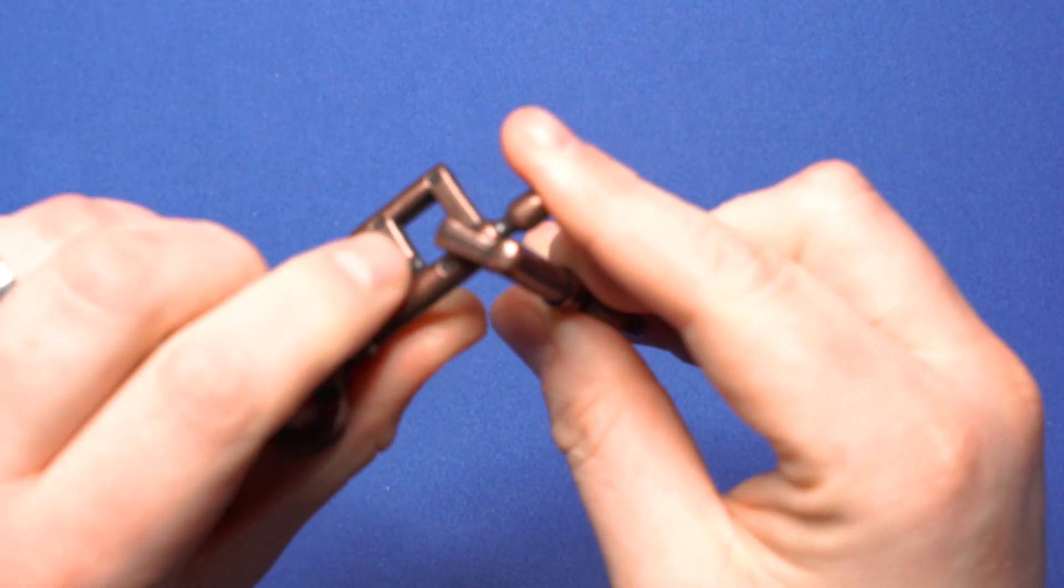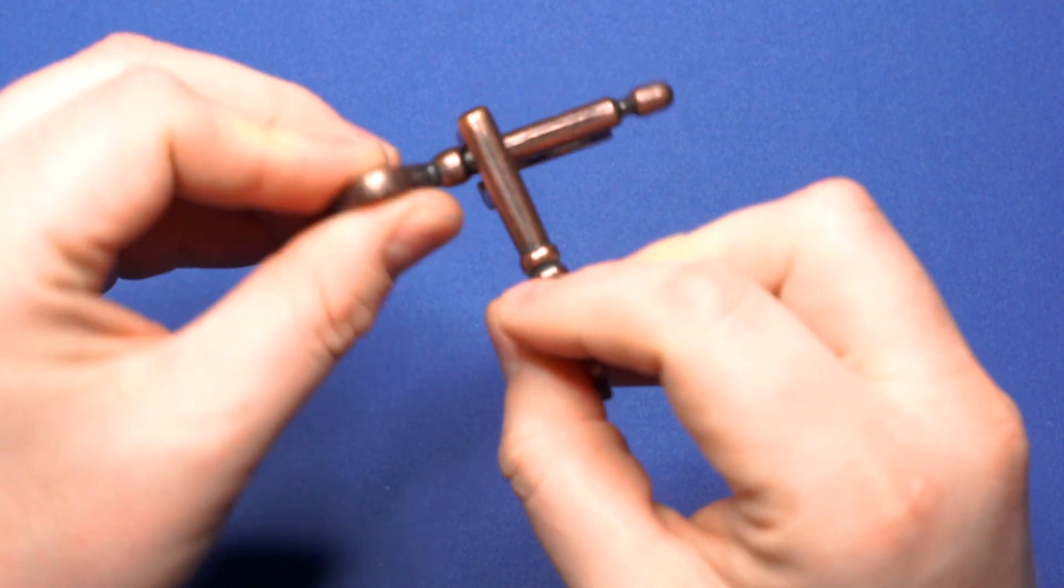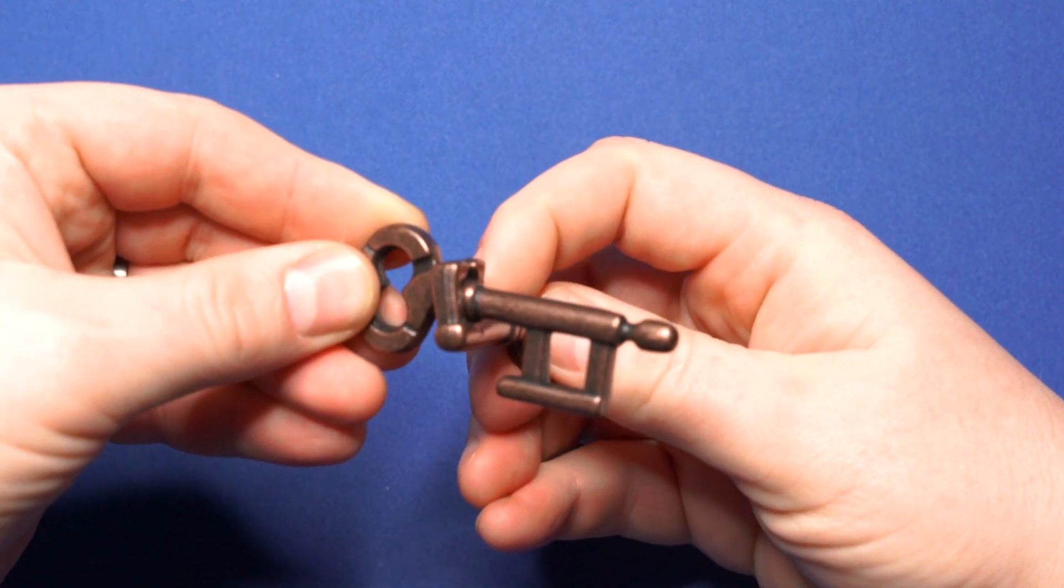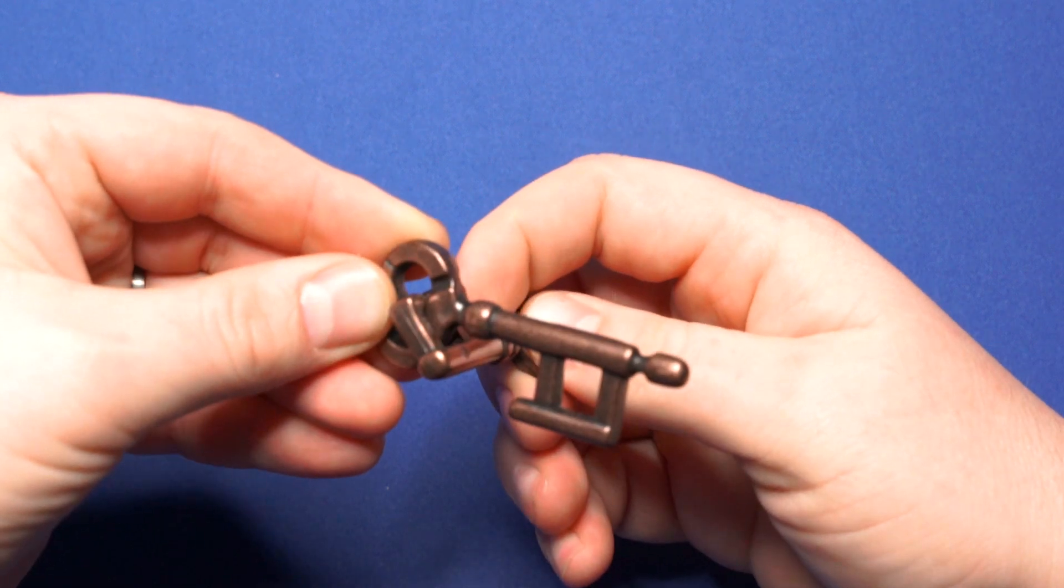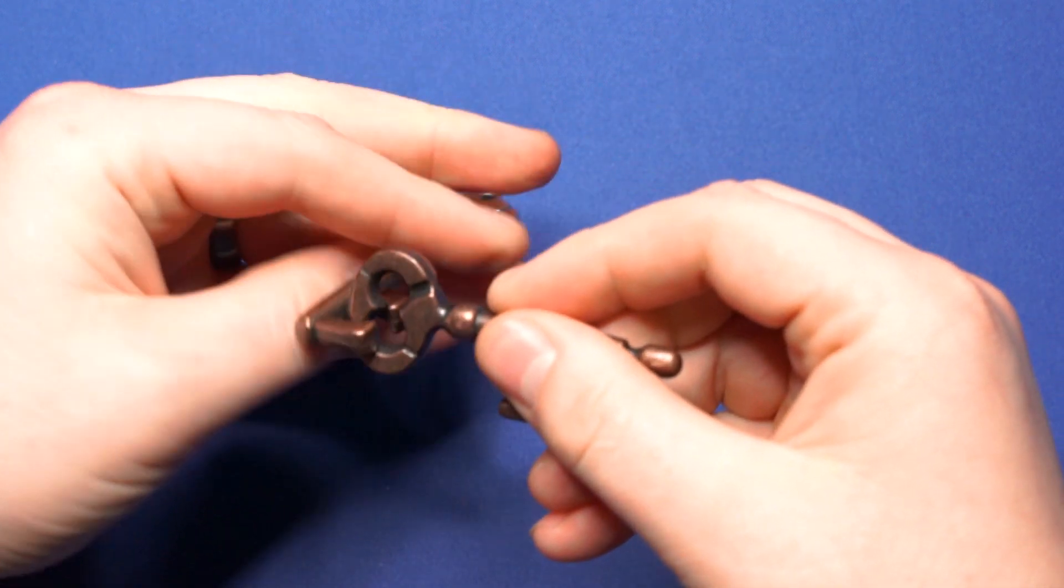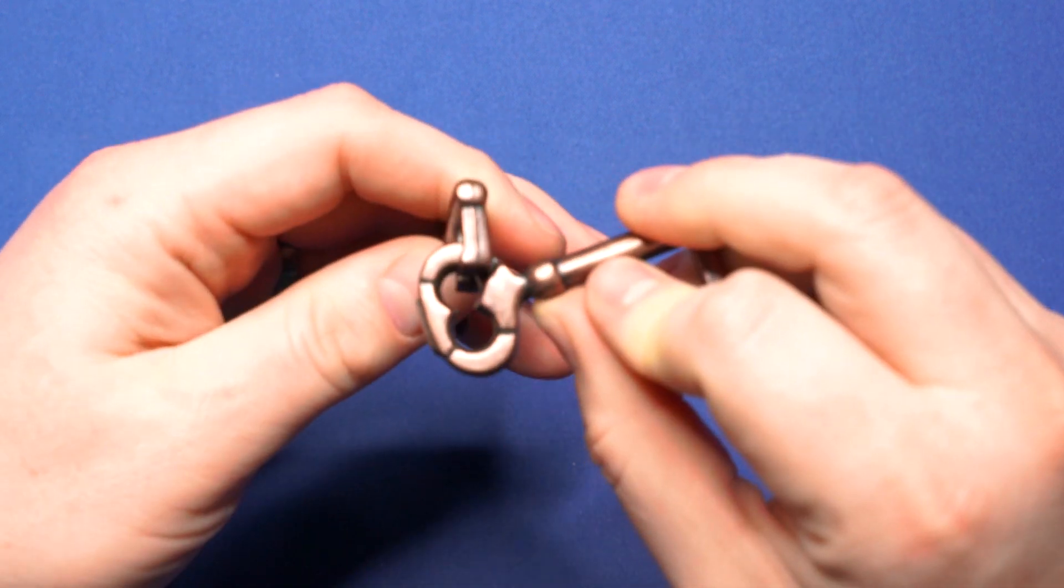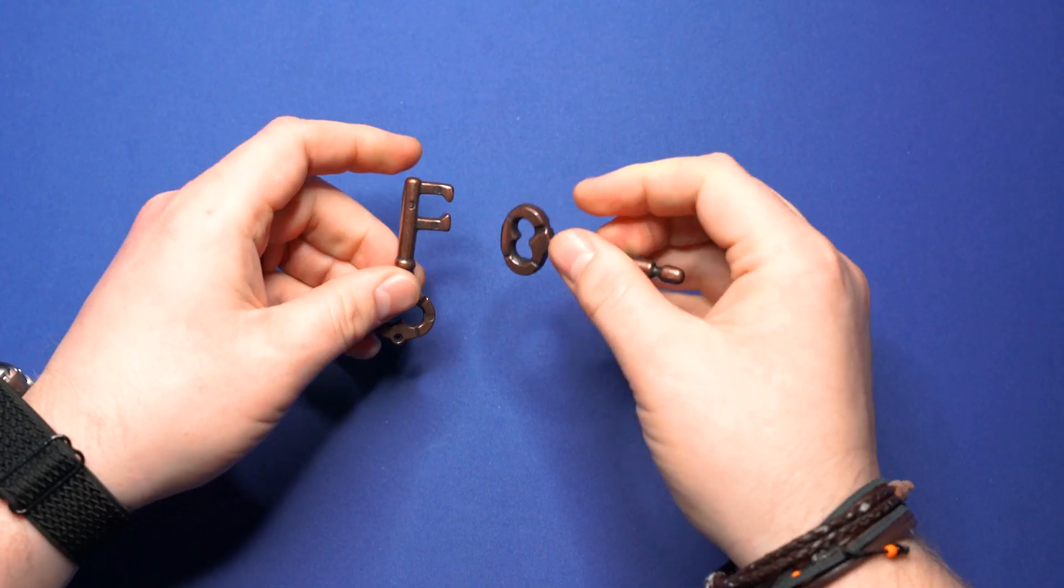Let's see on this side there's a groove. You can pass over that groove that way. Then bring it back around. Pass through this groove. And then bring it around. And back out that groove. And there you go.